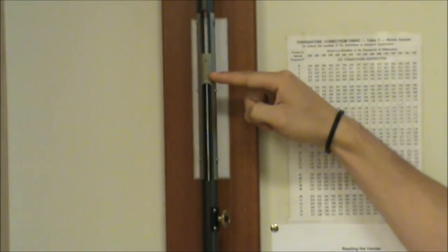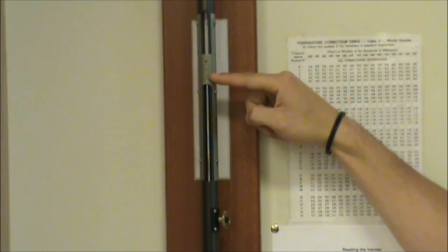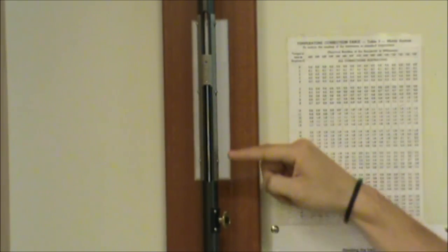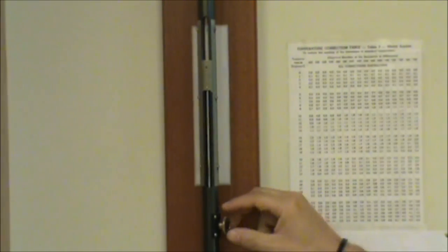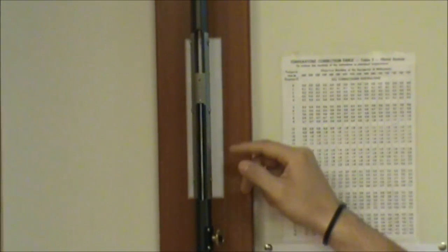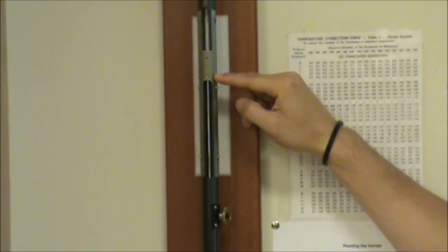In order to measure the height of the mercury, we'll be using the vernier right here. We raise and lower the vernier by turning this brass knob. And it might be a little bit hard to see, so let's zoom in.